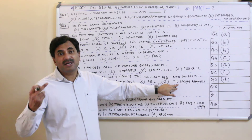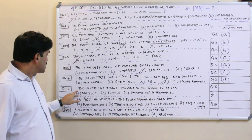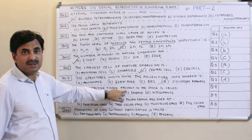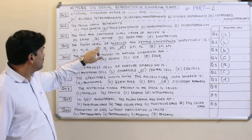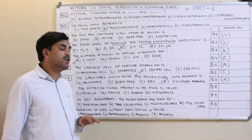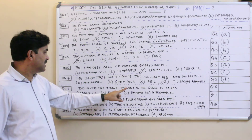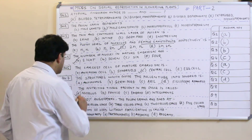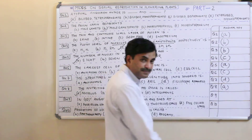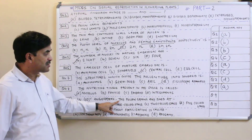Question number eight: the nutritive tissue present in the ovule. As mentioned in question four, the main nutritive tissue found in the ovule is the nucellus. Question number eight has the answer A.